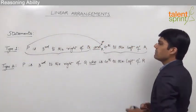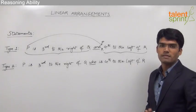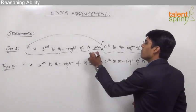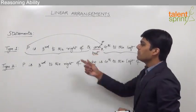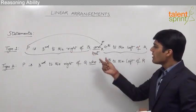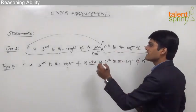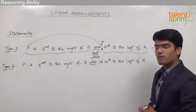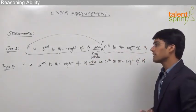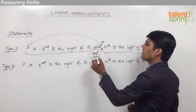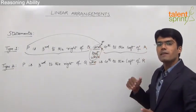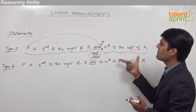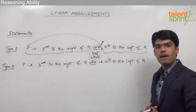Similarly, instead of 'and,' sometimes the word 'but' is used — 'P is third to the right of Q but fourth to the left of R' — and in some cases the word 'while' is used — 'P is third to the right of Q while fourth to the left of R.' In all three cases we always refer to the first person. So the first part is P is third to the right of Q, and the second part is P is fourth to the left of R.